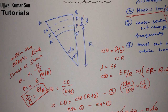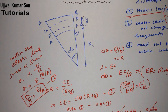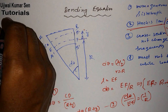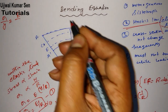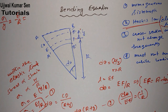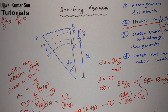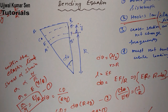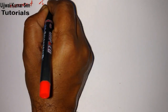So we can write σ/y = E/R. We have now derived the first part of the bending equation. The well-known bending equation includes σ/y = E/R. Now we need to derive the other part of the equation, which involves the moment of resistance.